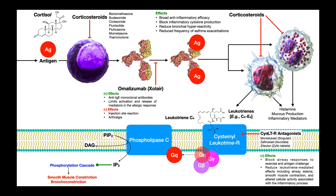The next class of drugs are the cysteinyl leukotriene receptor antagonists. One of the most common — probably advertised — is Singulair. These drugs basically just block leukotrienes from binding to this receptor. Normally, leukotrienes C4 through E4 bind to the receptor and trigger activation of phospholipase C, which increases cytoplasmic IP3 and promotes bronchoconstriction. By blocking this receptor, you prevent the leukotrienes from binding and ultimately reduce IP3 and reduce the degree of bronchoconstriction, helping to keep the airways open.